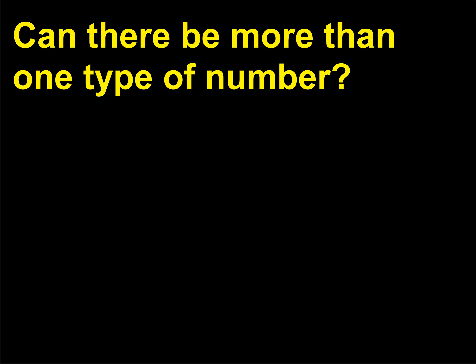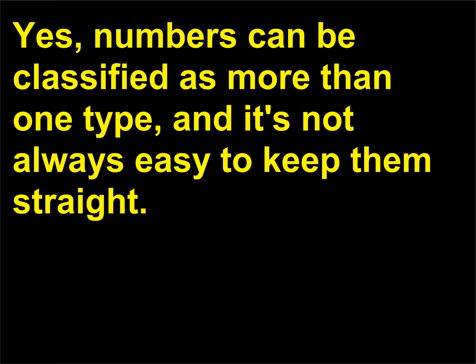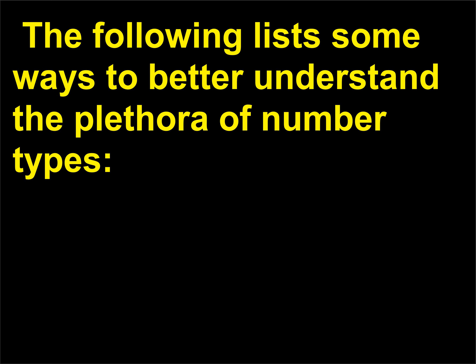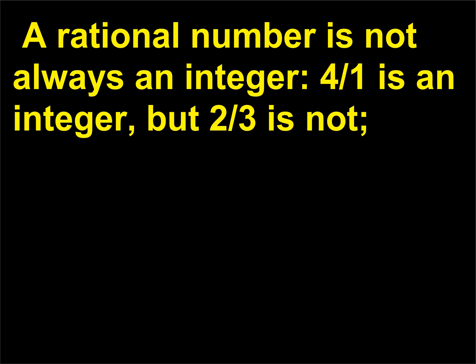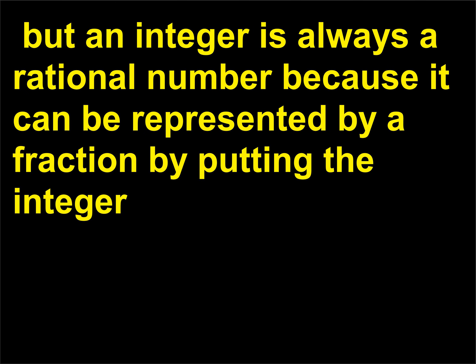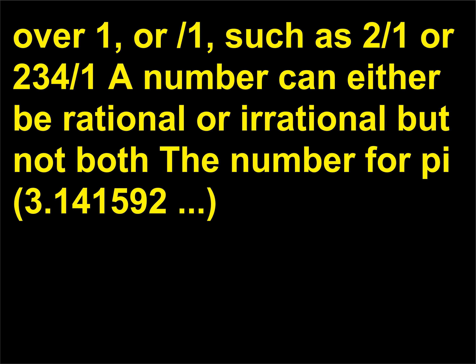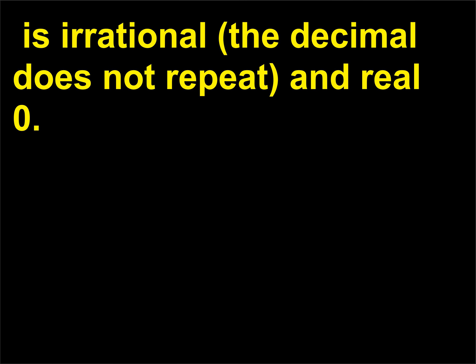Can there be more than one type of number? Yes, numbers can be classified as more than one type, and it's not always easy to keep them straight. A rational number is not always an integer — 4/1 is an integer, but two-thirds is not — but an integer is always a rational number because it can be represented as a fraction by putting the integer over 1, such as 2/1 or 34/1. A number can either be rational or irrational, but not both. The number π, 3.141592…, is irrational because the decimal does not repeat.